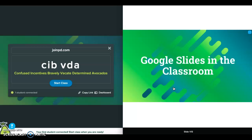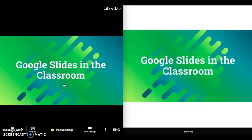On the teacher view I can now see that I have one student connected, and I'll go ahead and start class. My view shows the same thing that the students see, and students don't have the option in instructor paced mode to go back and forth between slides — that is completely the control of the instructor.